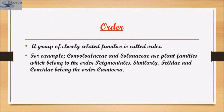Order is a higher category based on an assemblage of families that exhibit a few similar characters, with fewer similarities than genera within a family. Plant families like Solanaceae and Convolvulaceae are included in the order Polemoniales, mainly based on floral characters. Similarly, Felidae and Canidae — the cat family and dog family — both belong to order Carnivora.